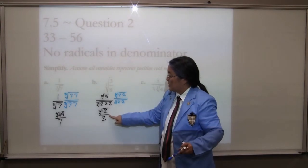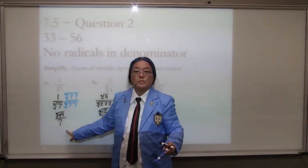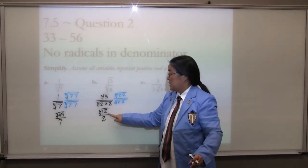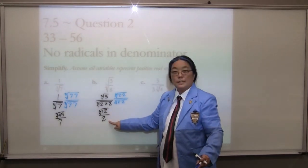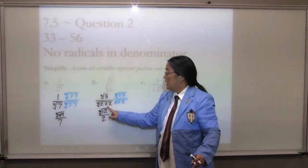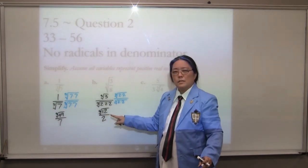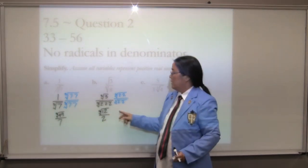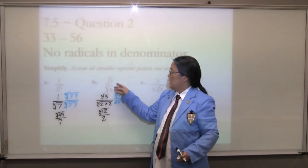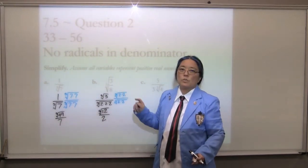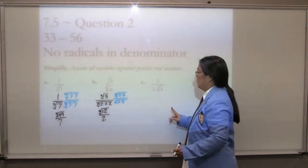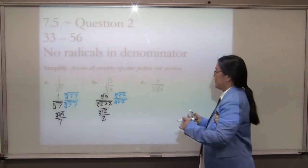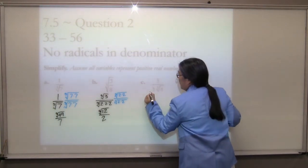Some students want to reduce that. Some students want to reduce this. This is on the inside, that's on the outside — they cannot play together. This is on the inside, that's on the outside — they cannot play together. If you can reduce this, you could, but you shouldn't be able to. If you can reduce this, it means that you should have reduced this original fraction. That is not a nice problem there, but it is very good.